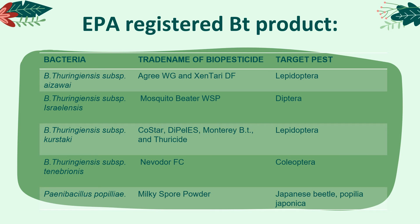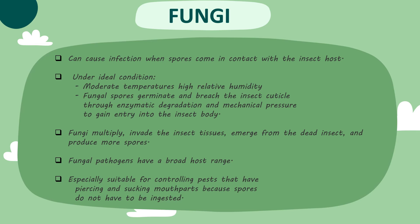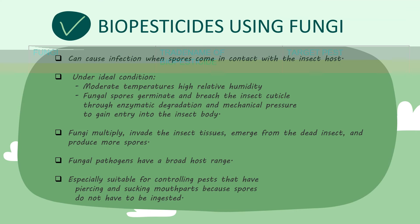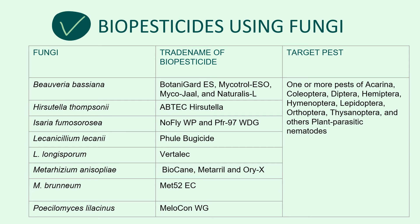The table below shows the EPA-registered Bacillus thuringiensis products; these biopesticides work specifically on the target pest. The second one, we move on to entomopathogenic fungi. It can cause infection when spores come in contact with the insect host. Under ideal conditions of moderate temperature with high relative humidity, fungal spores germinate and breach the insect cuticle through enzymatic degradation and mechanical pressure to gain entry into the insect body. Fungi multiply, invade the insect tissue, emerge from the dead insect, and produce more spores. Fungal pathogens have a broad host range, and are especially suitable for controlling pests that have piercing and sucking mouthparts because spores do not have to be ingested.